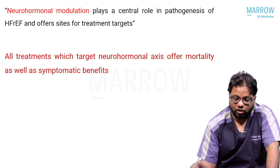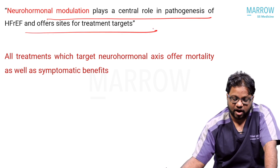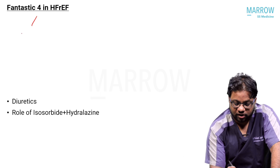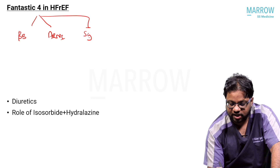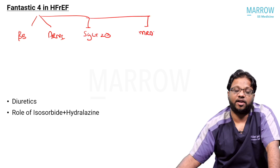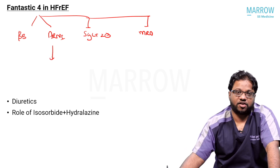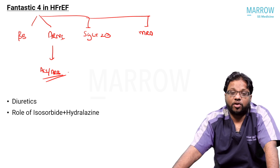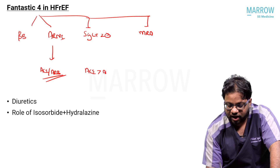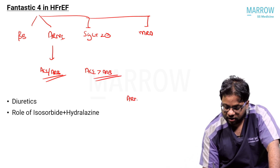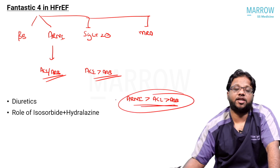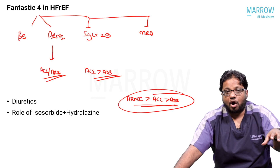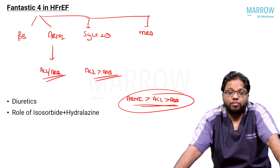These four drug classes together are called the 'Fantastic Four.' Neurohormonal modulation plays a central role in the pathogenesis of HFrEF and offers treatment targets; all treatments targeting the neurohormonal axis offer mortality and symptomatic benefits. The Fantastic Four are: beta blockers + ARNI + SGLT2 inhibitor + MRA. If ARNI cannot be given due to cost concerns — though costs have come down under price control — you can substitute ACE inhibitors or ARBs. Preference order: ARNI > ACE > ARB.